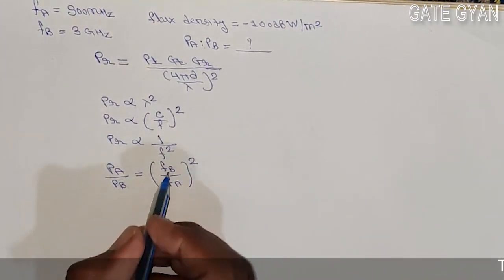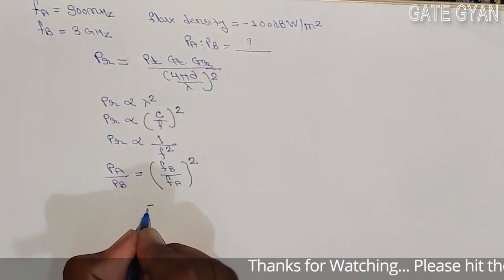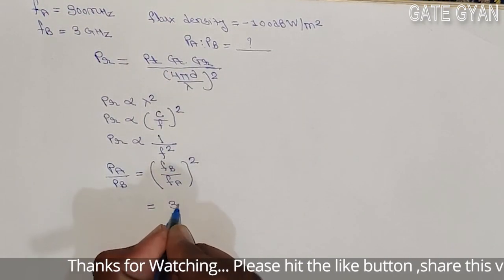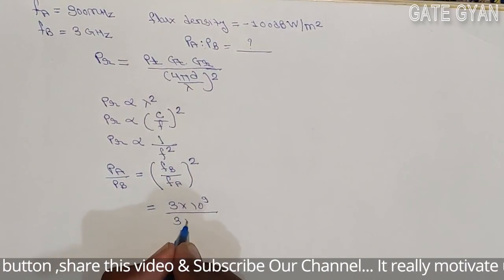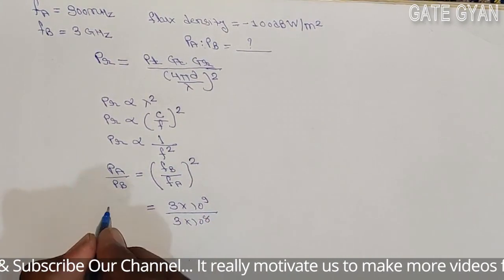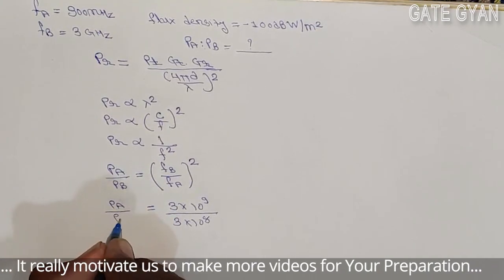fb and fa are given. So we can write as 3 times 10 to the power 9 divided by 3 times 10 to the power 8, Pa divided by Pb whole square.